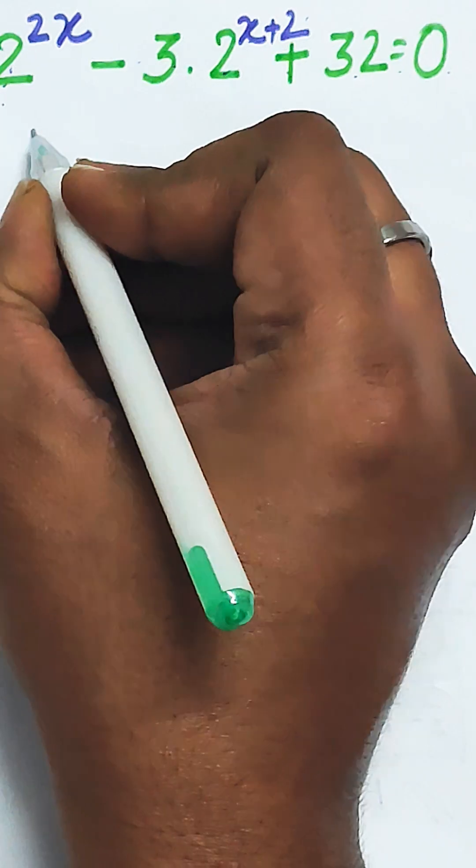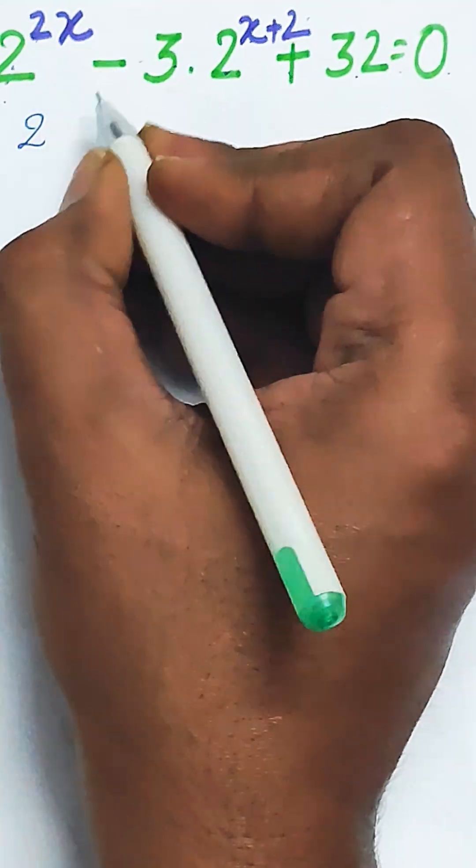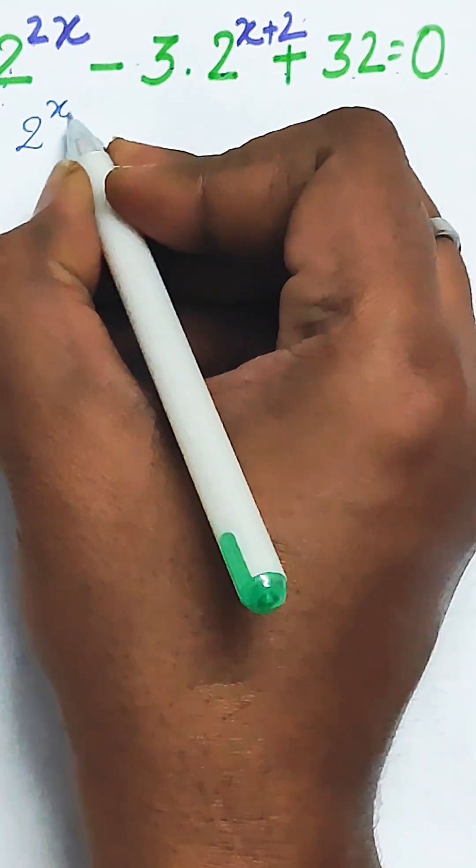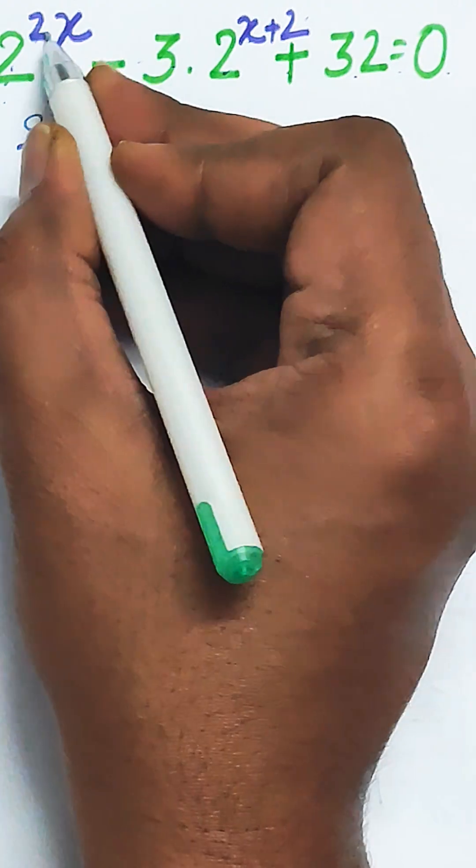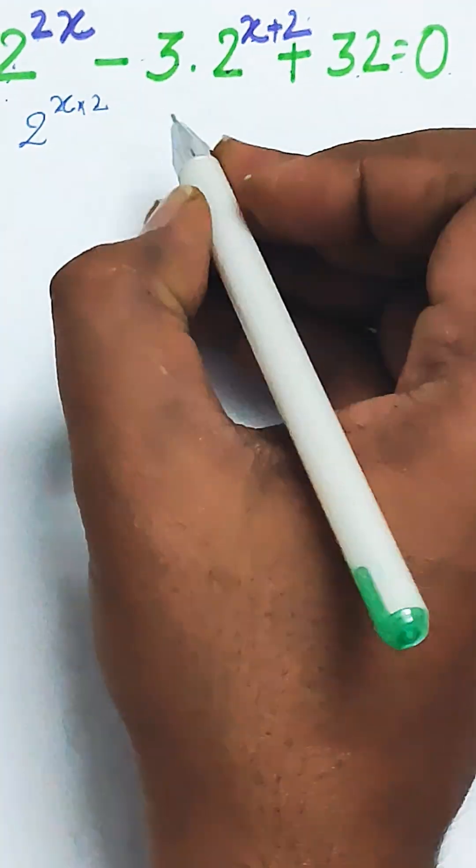So the first term can be written as 2 to the power 2x can be written as 2 to the power x into 2, because 2 into x equals x into 2.